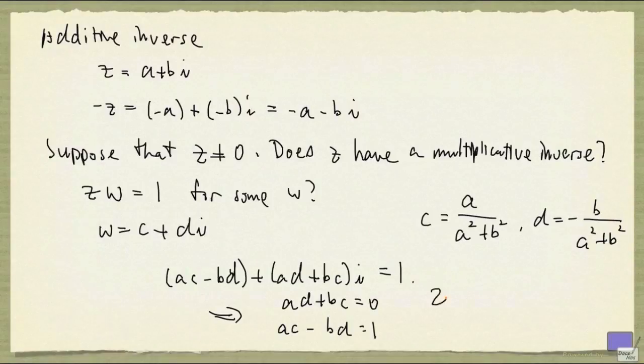And so we can say that the multiplicative inverse of z, denoted by z superscript minus 1, is given by a over a squared plus b squared, minus b over a squared plus b squared times i.